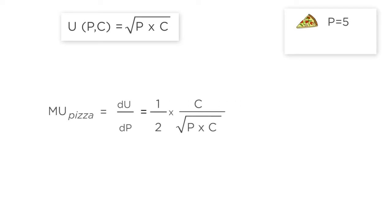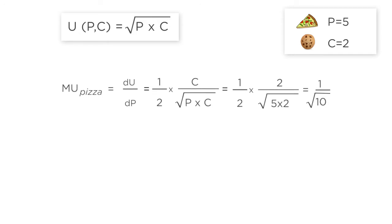When p equals 5 and c equals 2, the marginal utility of pizza is 1 over the square root of 10. In a similar way, we can find the marginal utility of cookies at this point.